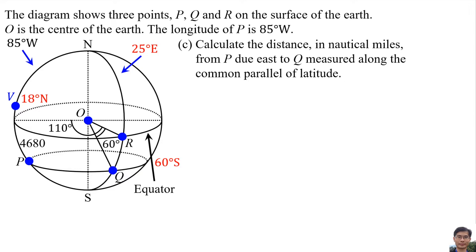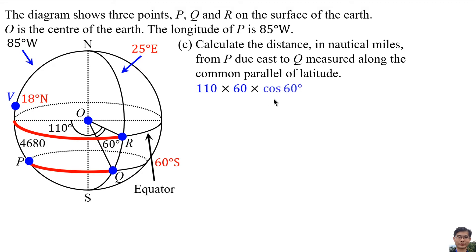Calculate the distance in nautical miles from P to Q measured along the common parallel of latitude. The difference in longitude between point P and point Q is 110 degrees. We convert 110 degrees into nautical miles by multiplying by 60 and by cosine of 60 degrees, giving 3300 nautical miles.